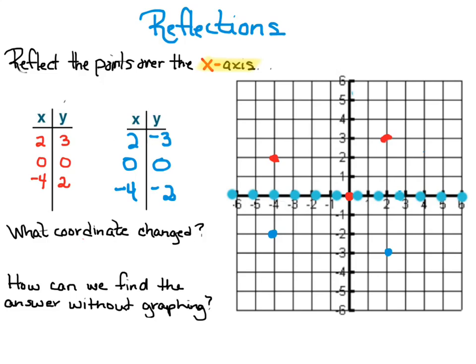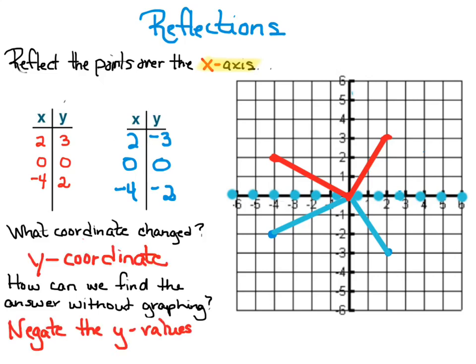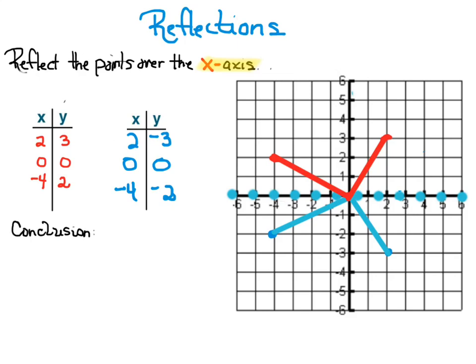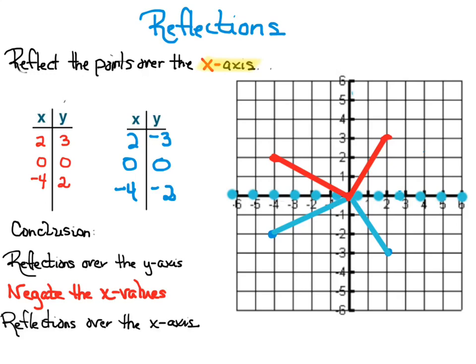So again, which coordinate changed? Well, it wasn't the x coordinate this time, it was the y. So how can we find the answer without graphing? We just simply negate the y values. So in conclusion, when reflecting over the y-axis you negate the x values. When reflecting over the x-axis you negate the y values.